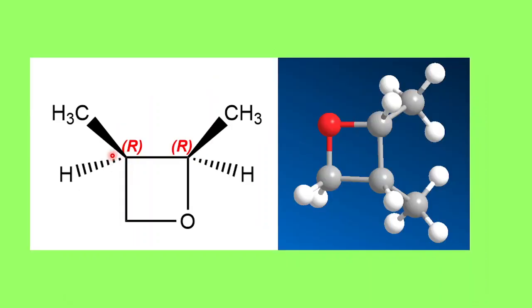The first structure is a cyclobutane ring with an oxygen. This is a heterocyclic compound. You can clearly see that there are two chiral centers in this molecule, so this will show stereoisomerism.